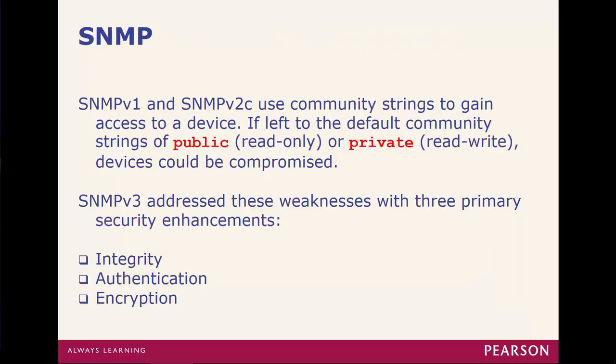There are several versions of SNMP. SNMP version 1 and version 2 use community strings to gain access to a device, with default community strings of public or private for read-write. SNMP version 3 addresses these weaknesses with three primary security enhancements. If you have the ability, we're using the newest version because it introduces security — it won't just allow any random unit to do an SNMP get. The security enhancements are things like integrity, authentication, and encryption.